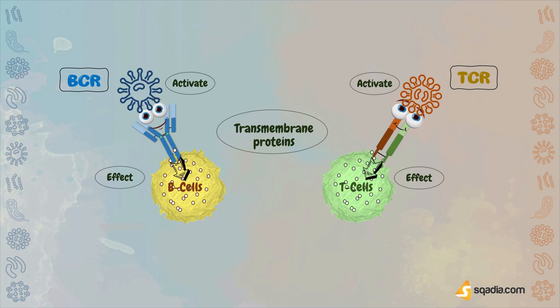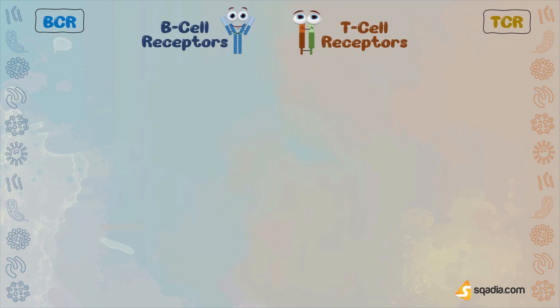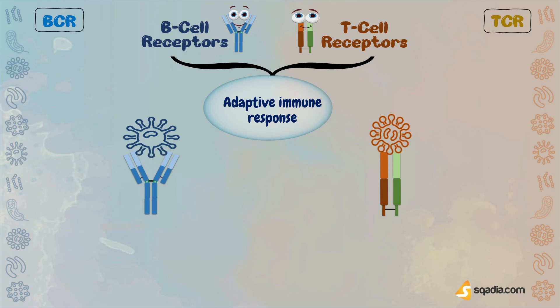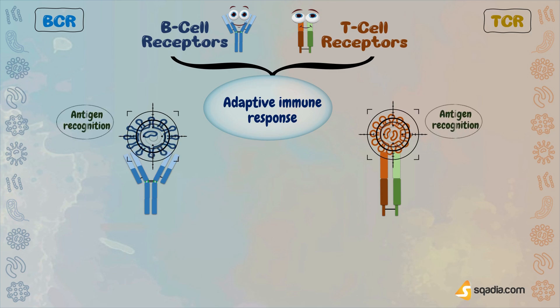Both T-cell receptors (TCRs) and B-cell receptors (BCRs) are the integral components of the adaptive immune system, where they are known for their vital roles in recognizing and responding to antigens. Their main role is antigen recognition, and they do their action while anchoring over the surface of B and T lymphocytes, respectively.